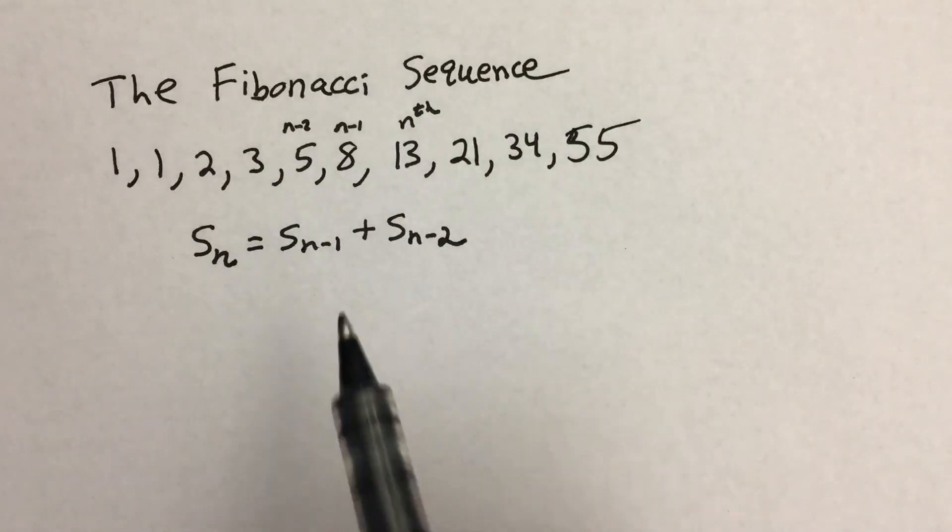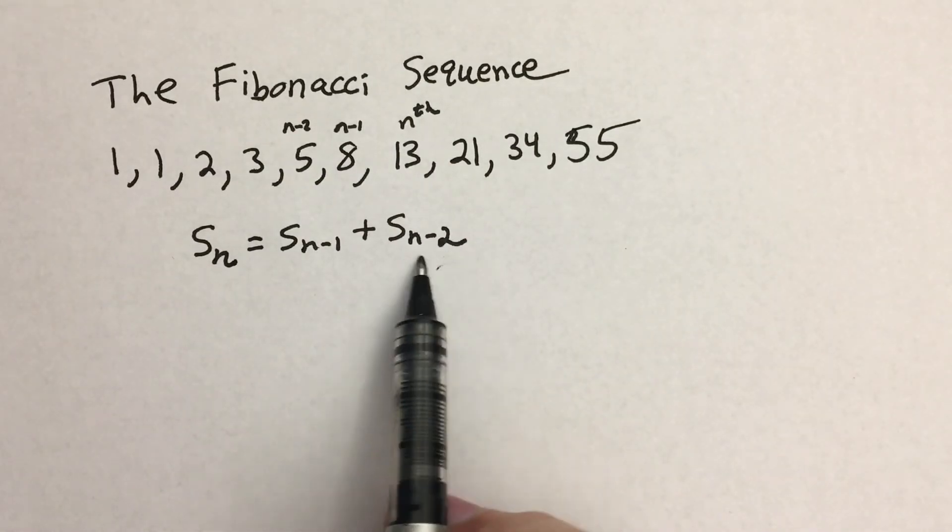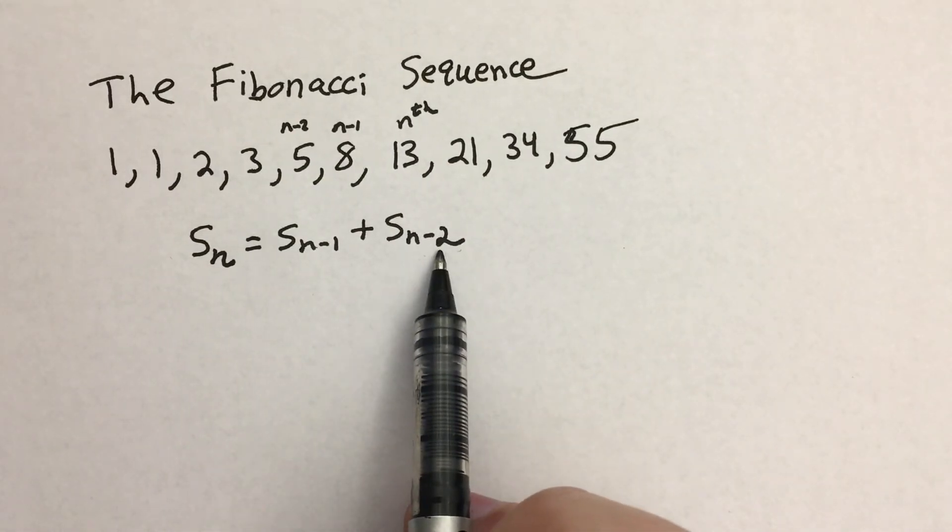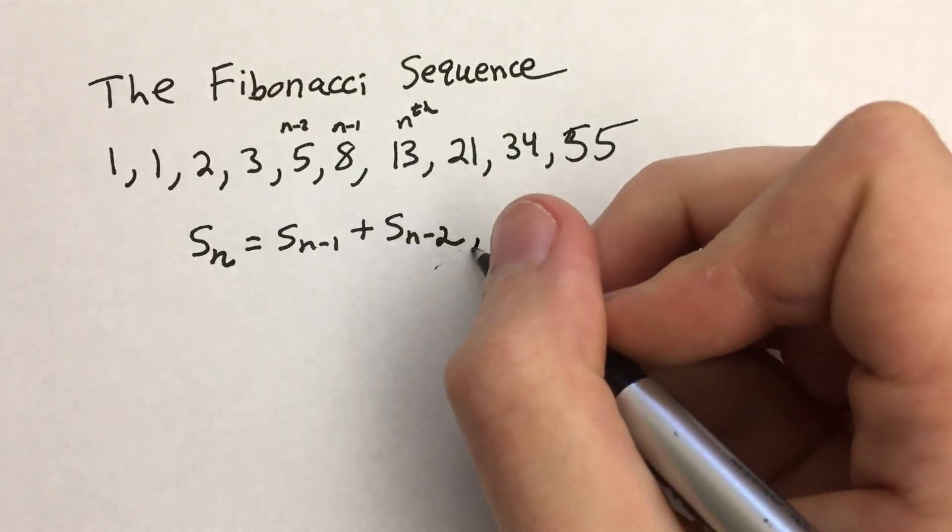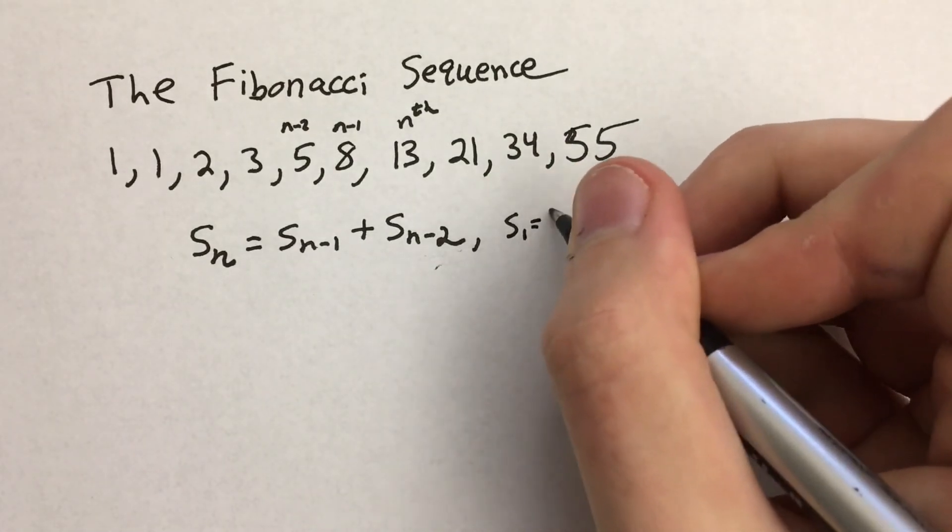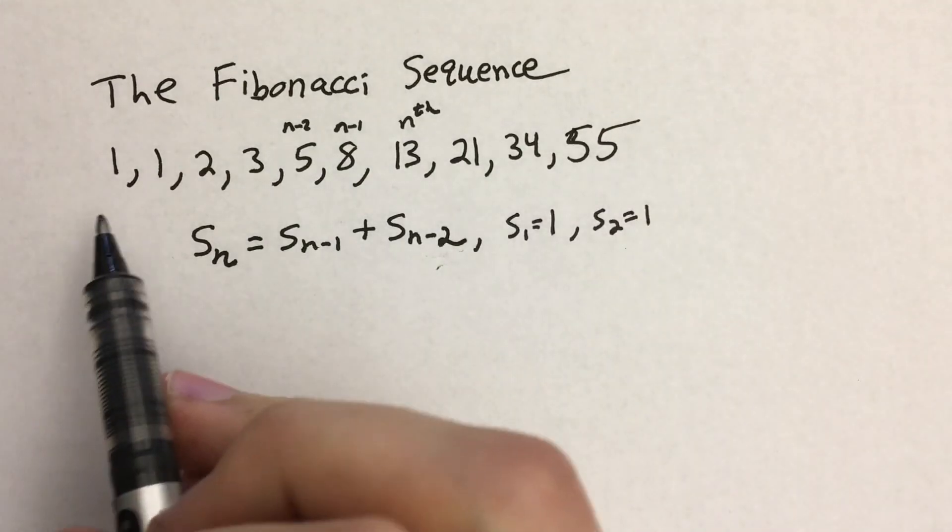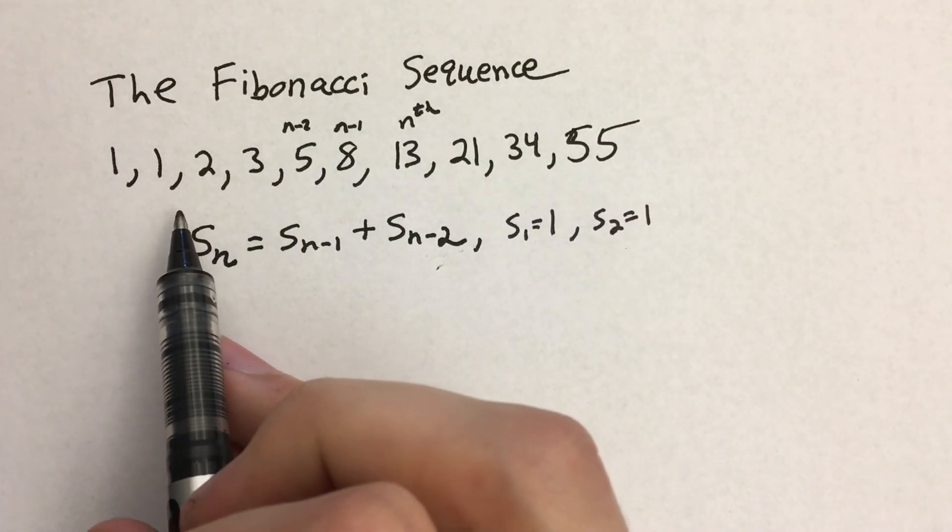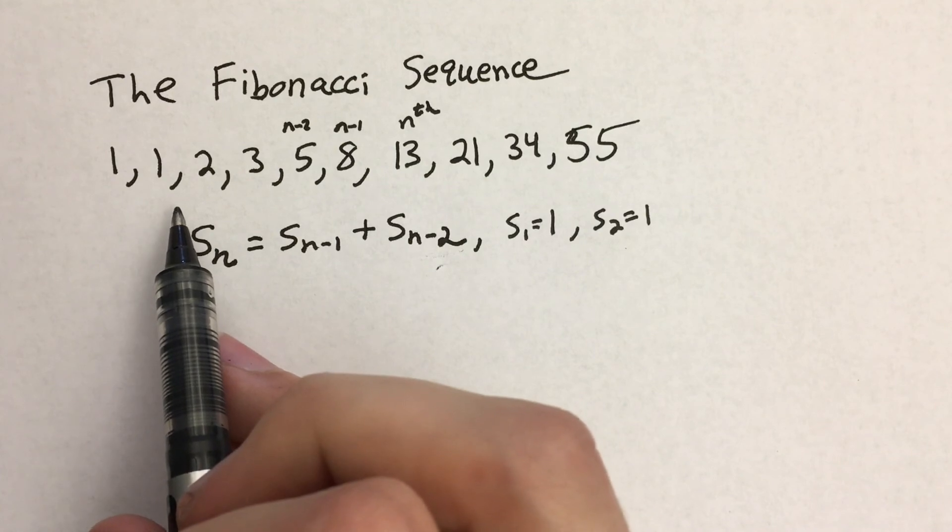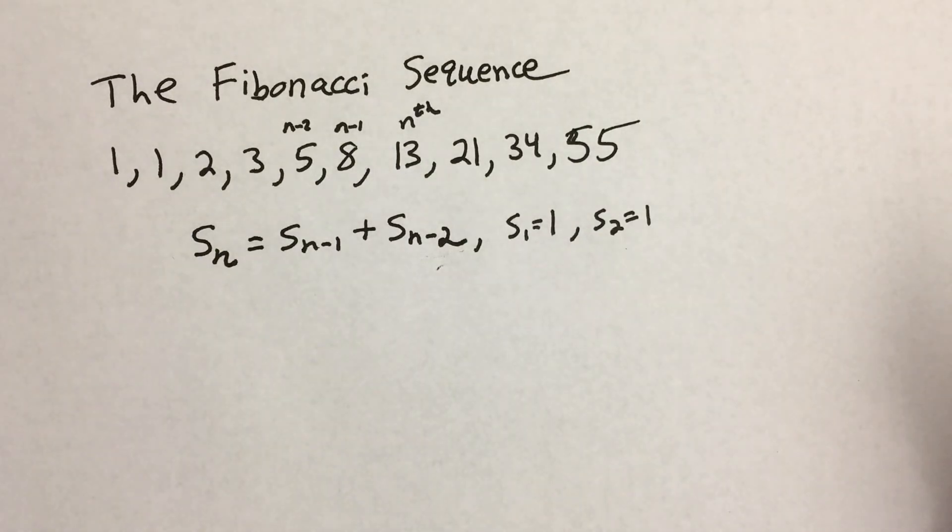And because at most we're going two terms back, that means we need two initial conditions. So we also want to define S sub 1 equals 1 and S sub 2 equals 1 because those are the first two terms of the Fibonacci sequence. And that is it. That's how you find a recurrence relation for the Fibonacci sequence.